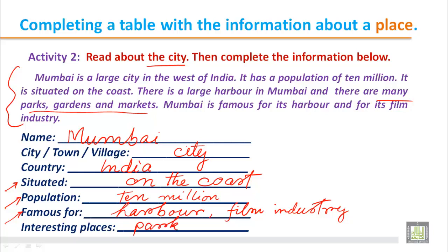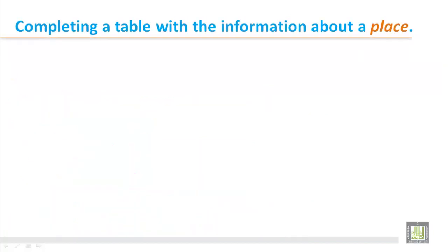So we write: parks, then gardens and markets. This is how we write the information about a place in a table — completing a table with the information about a place.